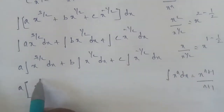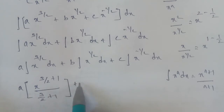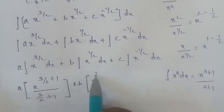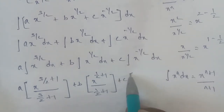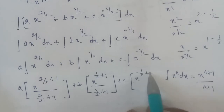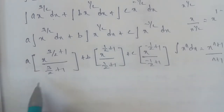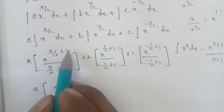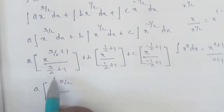Applying the formula to each term: for the first term, n equals 3 by 2, so x power of 3 by 2 plus 1, divided by 3 by 2 plus 1. Cross multiplying: 2 plus 3 gives 5 by 2, so the result is x power of 5 by 2, divided by 5 by 2. For the second term, n equals 1 by 2, giving x power of 1 by 2 plus 1, divided by 1 by 2 plus 1, which is x power of 3 by 2, divided by 3 by 2.